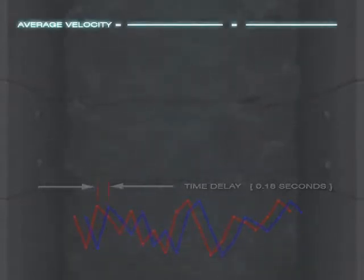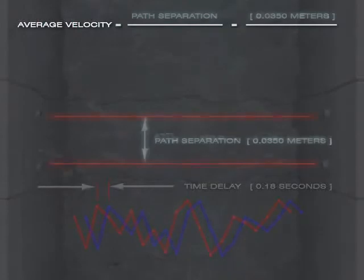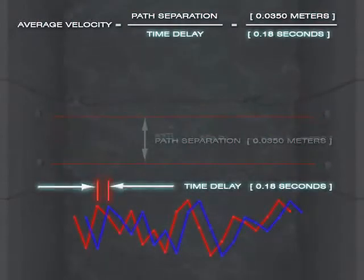Therefore, the average flow velocity is simply the distance between paths divided by the delay between the two signals.